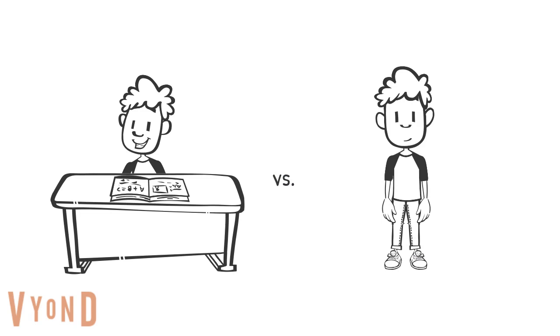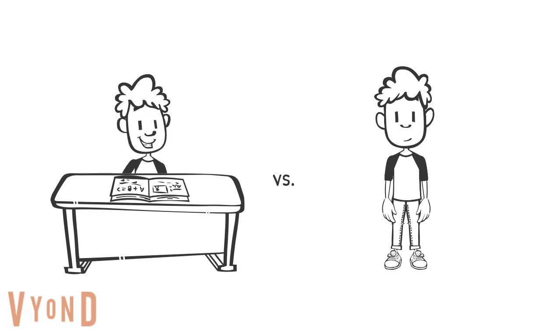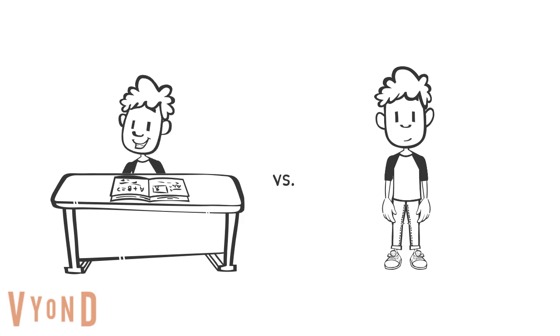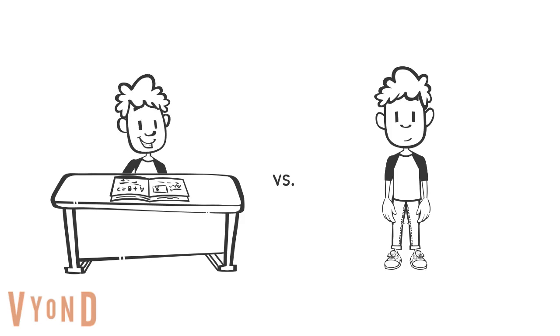An example of an incompatible behavior would be a student sitting down at their desk versus standing up. It's physically impossible for them to be sitting and standing at the same time.